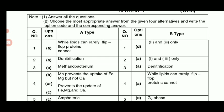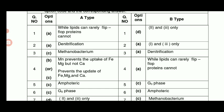The first option is option A, second option A, denitrification. Third option C, methanobacterium. Fourth option B. Fifth option C, that will be used.